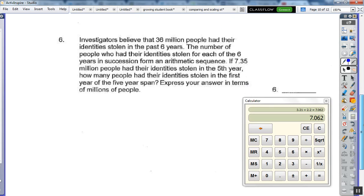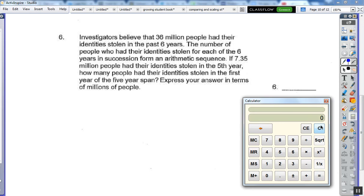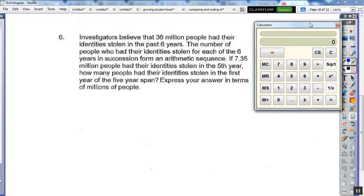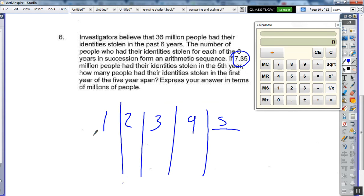Last problem. Investigators believe, oh geez, this one takes forever and I have basketball practice. Alright, so 36 million over six, the past six years. The number of people who had their identity stolen. In the fifth year, how many people had their identity stolen? The first of the five years. So we have here 5, here 4, 3, 2, 1. And so we know this is 7.35, and this is a linear relationship. And the sum is going to equal 36 million. And notice how this is all in millions, which is helpful.